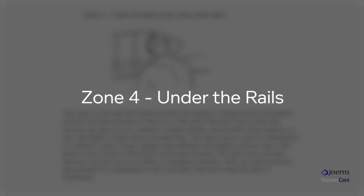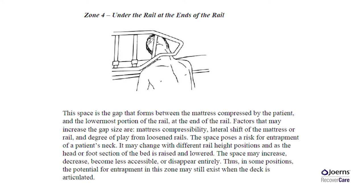Zone 4 – Under the rail at the ends of the rail. This space is the gap that forms between the mattress compressed by the patient and the lowermost portion of the rail at the end of the rail. Factors that may increase the gap size are mattress compressibility, lateral shift of the mattress or rail, and the degree of play from loosened rails. The space poses a risk for entrapment of a patient's neck. It may change with different rail height positions and as the head or foot section of the bed is raised or lowered — the space may increase, decrease, become less accessible, or disappear entirely.